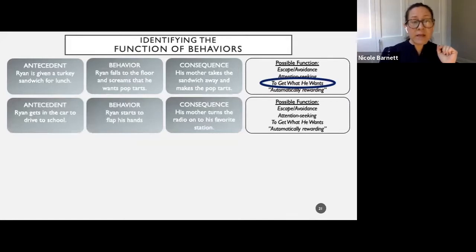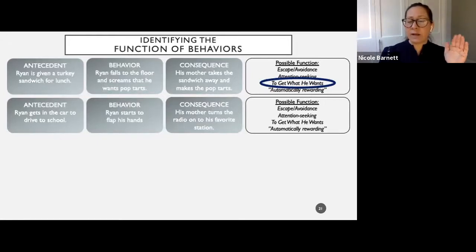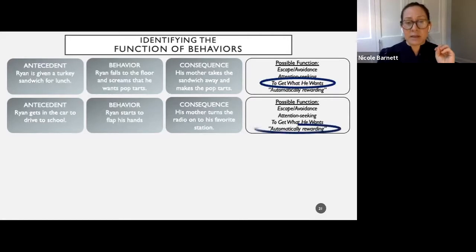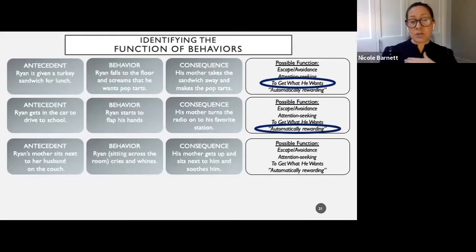Ryan gets in the car to drive to school and starts flapping his hands. His mother turns on the radio to his favorite station. I'm going to assume this is an automatic behavior because Ryan flaps his hands in a variety of situations — there's no correlation between the flapping and the radio — so I'll say automatically rewarding. Next: Ryan's mother sits next to her husband on the couch. Ryan, sitting across the room, cries and whines. His mother gets up and sits next to him and soothes him. The function is attention-seeking, and he got it.